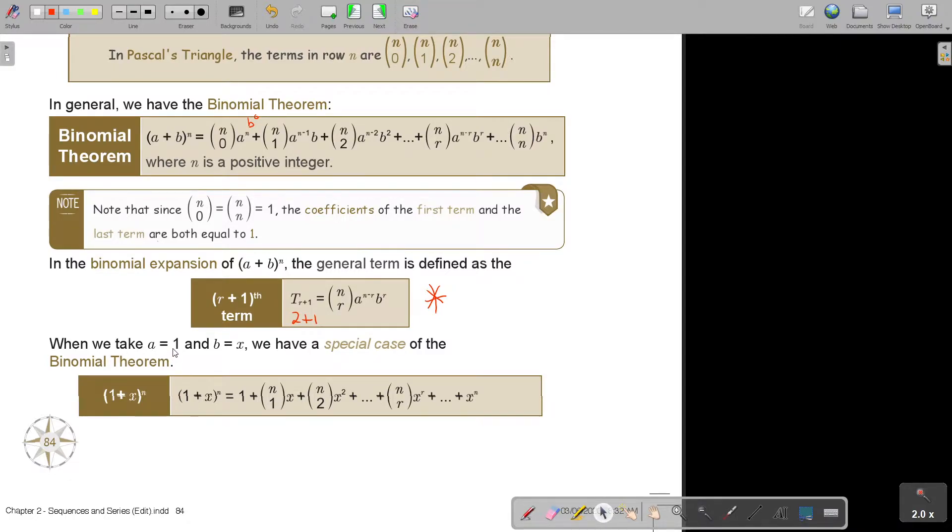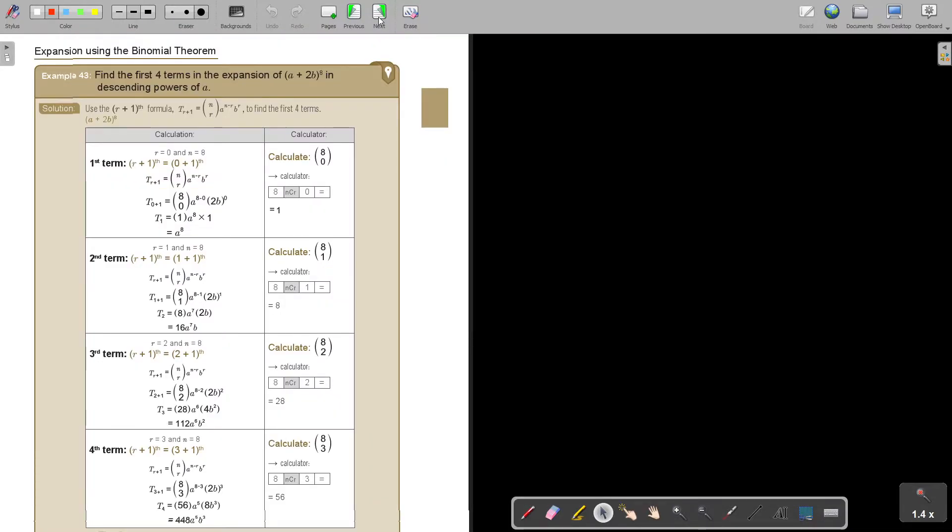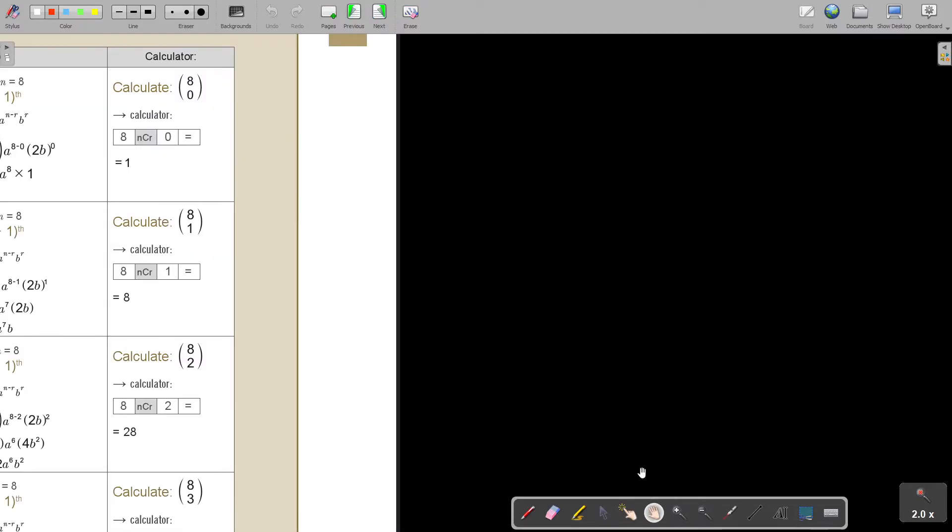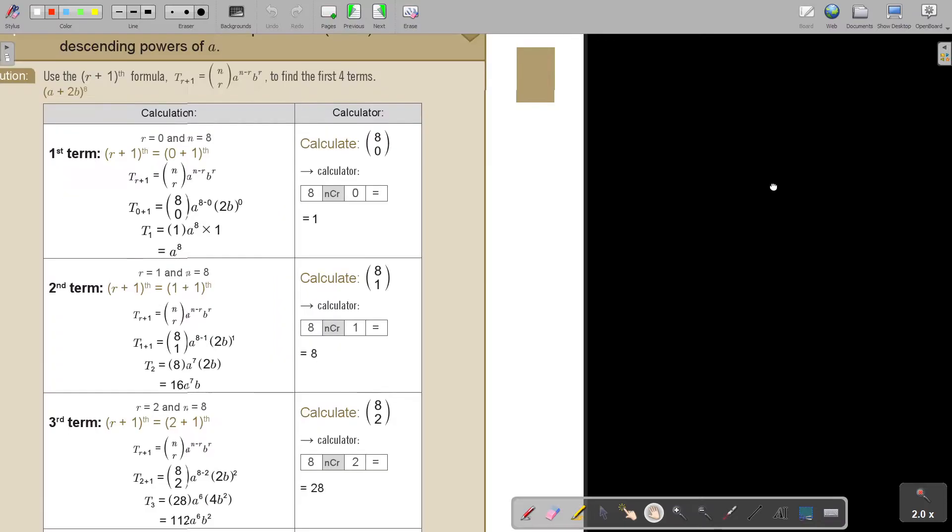When we take A is equal to 1 and B is equal to X, we have a special case of the binomial. So it's N1, N2, N3, this was N0, and then it's going to be X, X squared up to this. This is just if the first term is a 1. But let's look at an example. It's always the best to understand it in terms of an example.